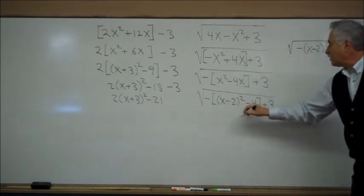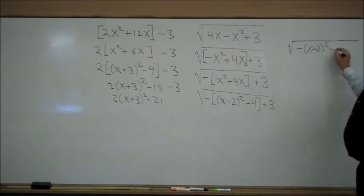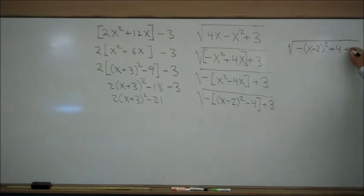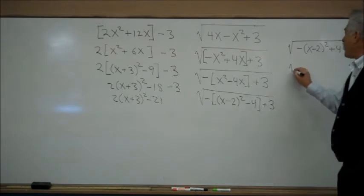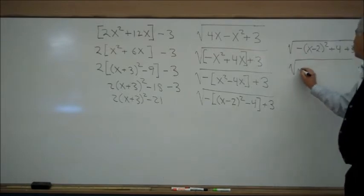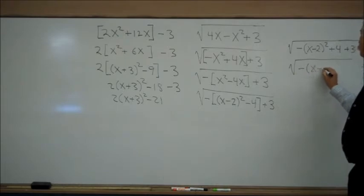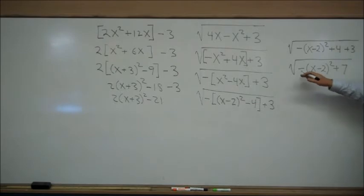I distribute the minus over the minus, get a plus 4, and the plus 3 is still there. That was the first step of cleanup. The second and last step of cleaning up is to add like terms. And I end up with minus (x - 2)² plus 7. And that expression can be used for analysis of what's happening inside the square root.